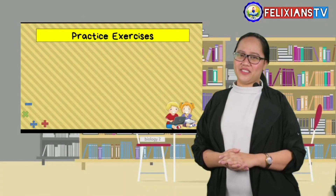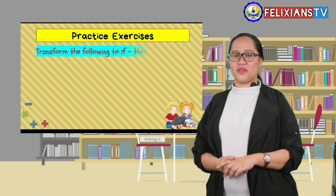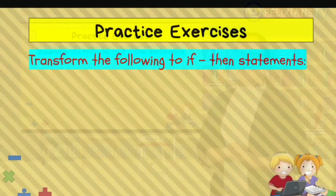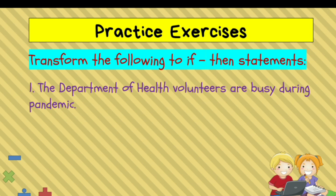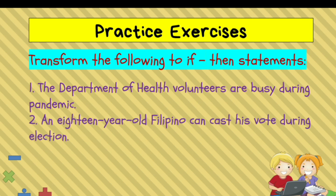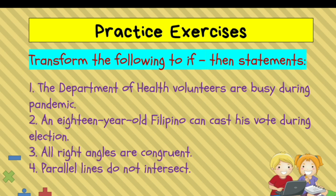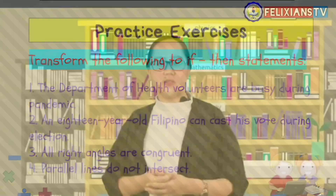I hope you are all having fun. Let's have a practice exercise. What you need to do is transform the following statements into if-then statements. Number one: the Department of Health volunteers are busy during pandemic. Number two: an 18-year-old Filipino can cast his vote during election. Number three: all right angles are congruent. And number four: parallel lines do not intersect. If you have paper and pen with you, try it at home.